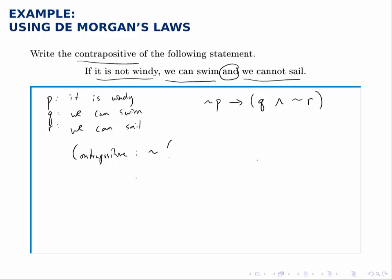will look like not q and not r implies not not p. Now of course not not p is just p, the negation undoes itself.